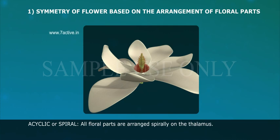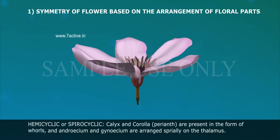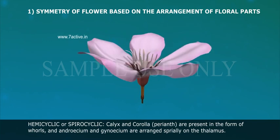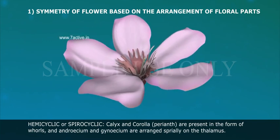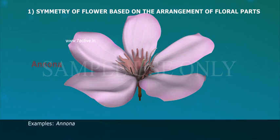Cyclic or spiral: all floral parts are arranged spirally on the thalamus. Example: magnolia. Hemicyclic or spirocyclic: calyx and corolla (perianth) are present in the form of whorls, and androecium and gynoecium are arranged spirally on the thalamus. Examples: annona, polyalthia.